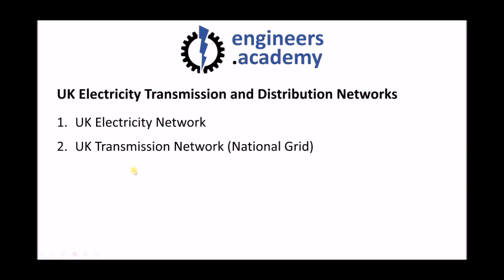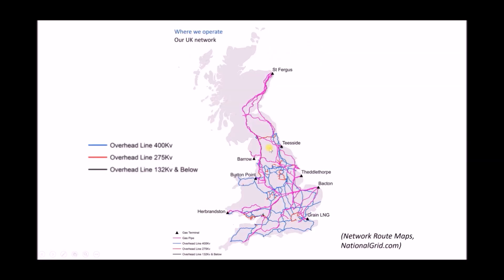Let's look at the UK transmission network, which is maintained by the National Grid. The transmission network runs the full length of the country. On this map we can see both gas pipes and overhead power lines, because the National Grid maintains both the transmission network and the gas supply network. The colours on the left-hand side indicate overhead power lines at 400 kilovolts, and the red lines indicate overhead power lines at 275 kilovolts, connecting towns and cities all around the UK.